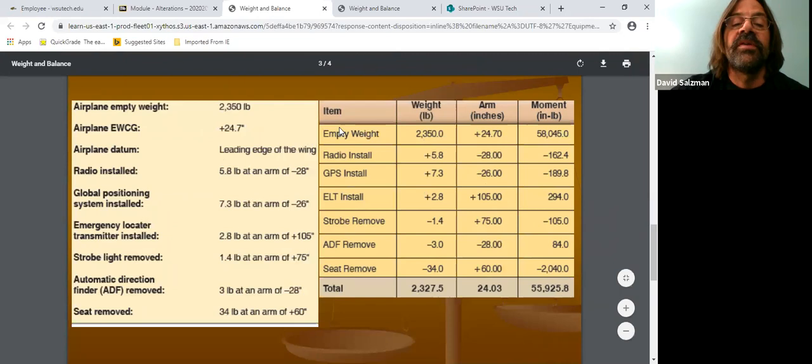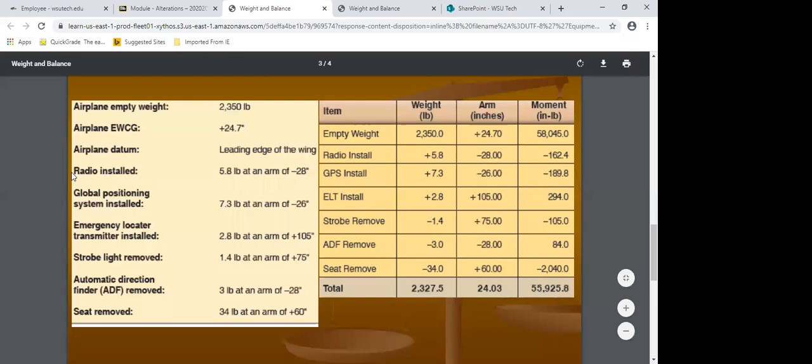So the first thing you want to do is on the first line, you want to put what the empty weight of the aircraft is. So in this case, it's 2,350 pounds. The CG, which is also known as the arm, is a positive 24.70. So if I multiply these two numbers together, it will give me my moment in inch pounds, which is 58,045 pounds. Everybody comfortable with that?